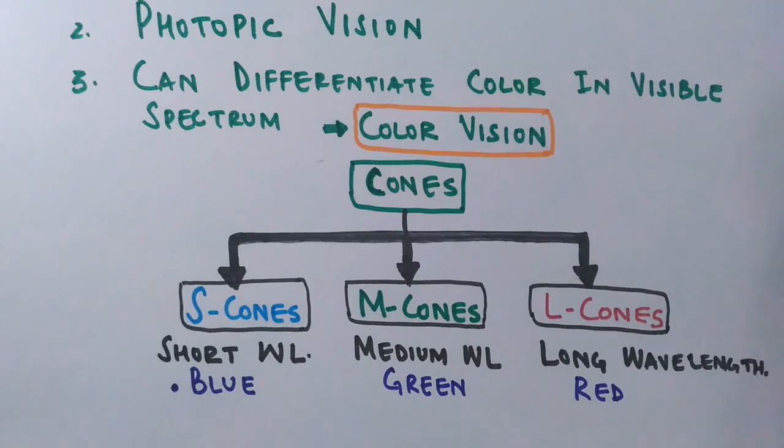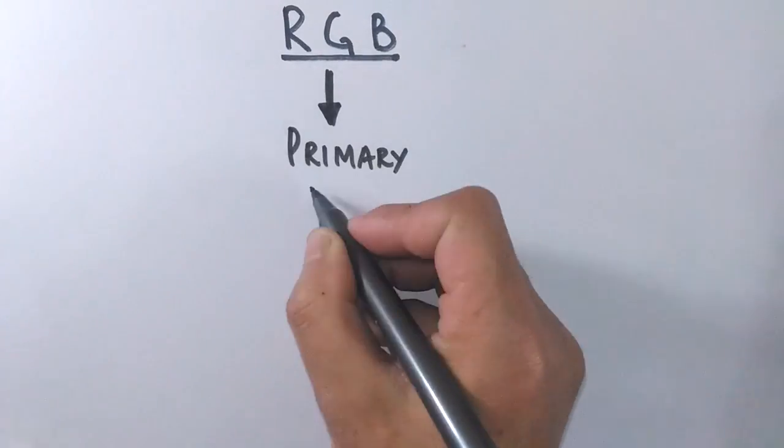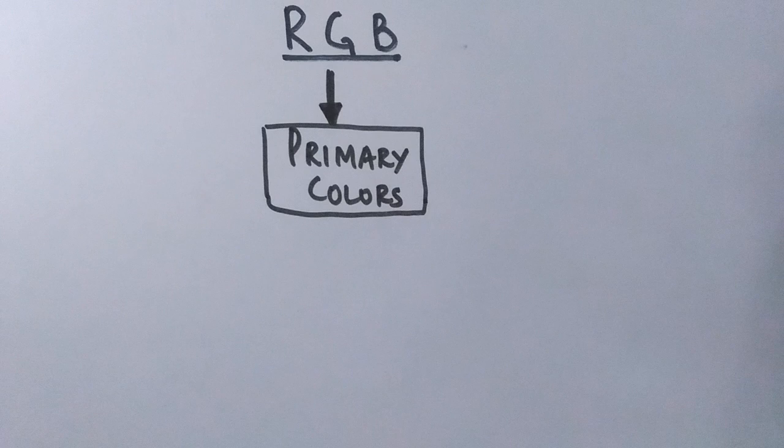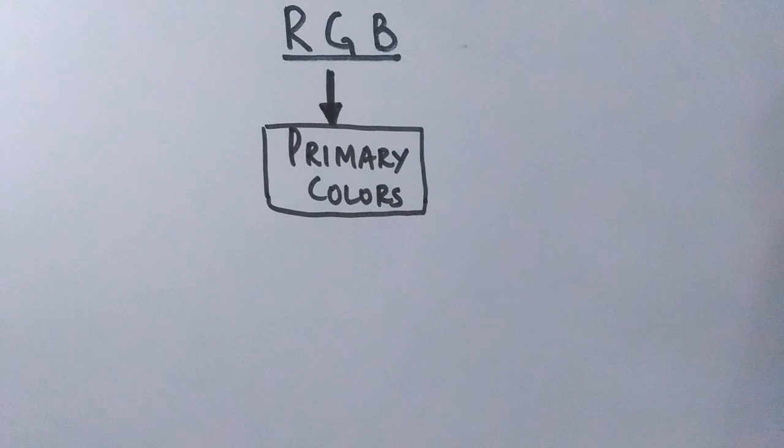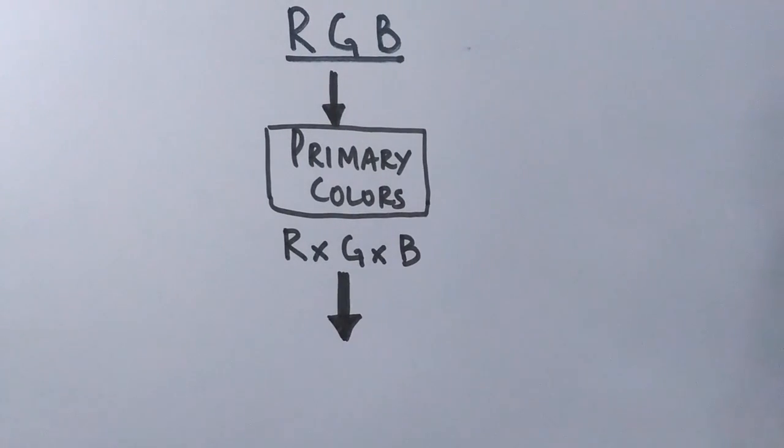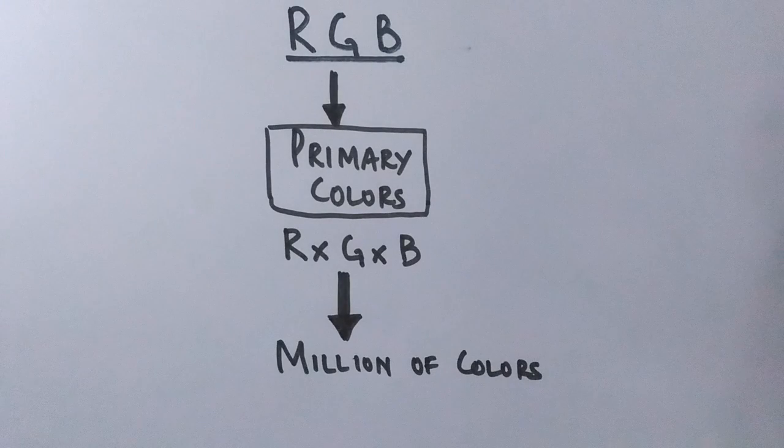These RGB primary colors will be received by their respective cones. Why are they called primary colors? Because these primary colors will form the secondary colors. They have the tendency to form different types of colors, or we can say millions of colors are formed by the primary colors. Like in the case of a printer, the printer has the same ink form, that's RGB, and the printer prints millions of colors that the computer gives it.